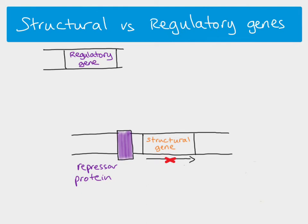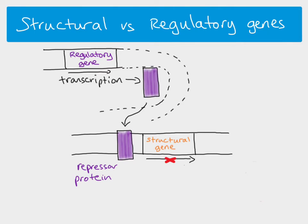A repressive protein is linked to a regulatory gene. When a regulatory gene is transcribed, the product is the repressive protein, which is then able to bind to the DNA. The regulatory gene and the structural gene are on the same length of DNA, just not right next to each other — the regulatory gene is a little distance away from the structural gene. So, structural genes produce proteins involved in the structure or metabolism of the cell, while regulatory genes produce proteins that control whether those structural genes are transcribed.